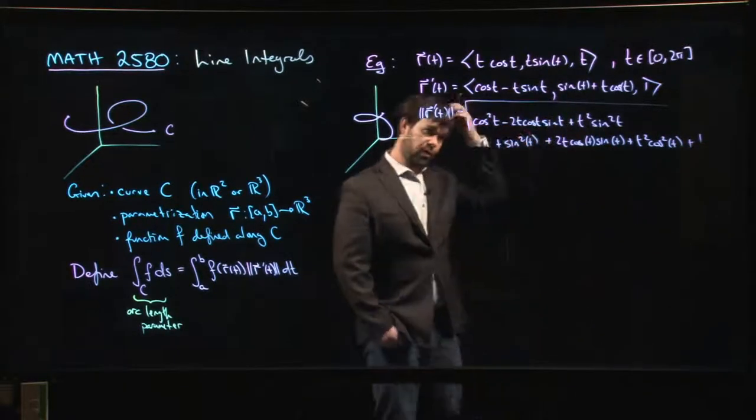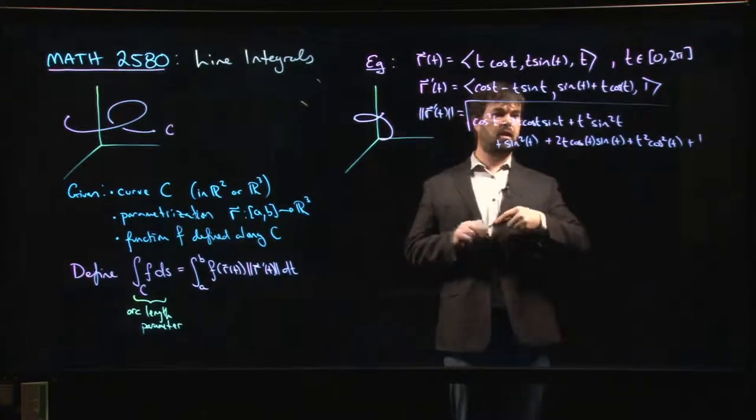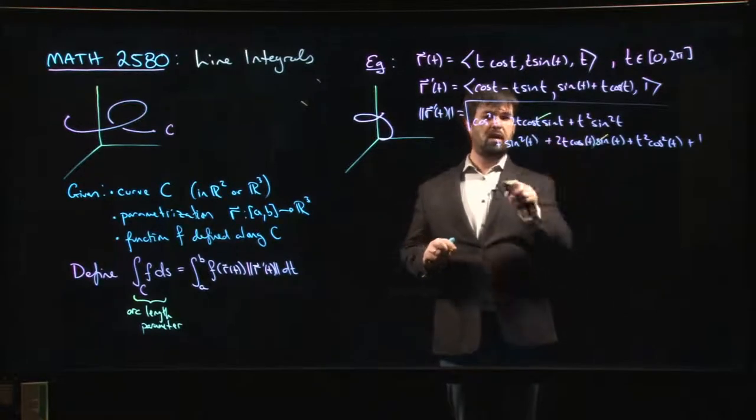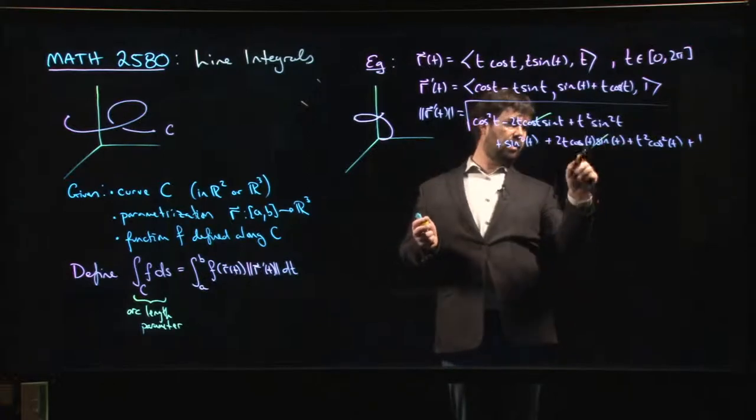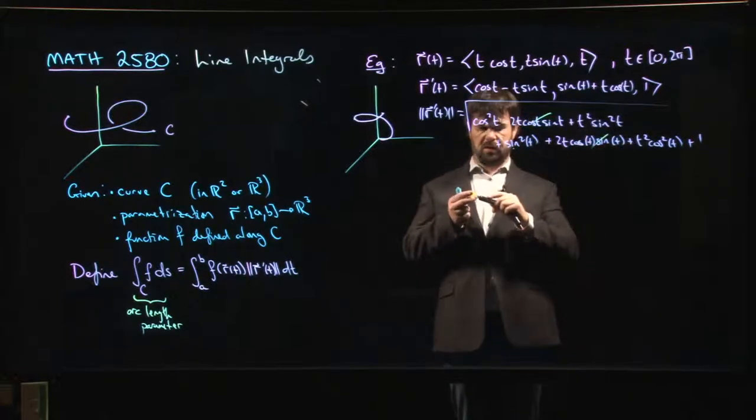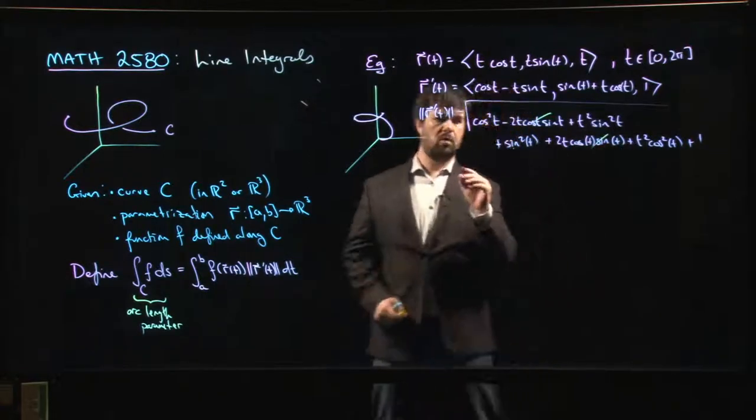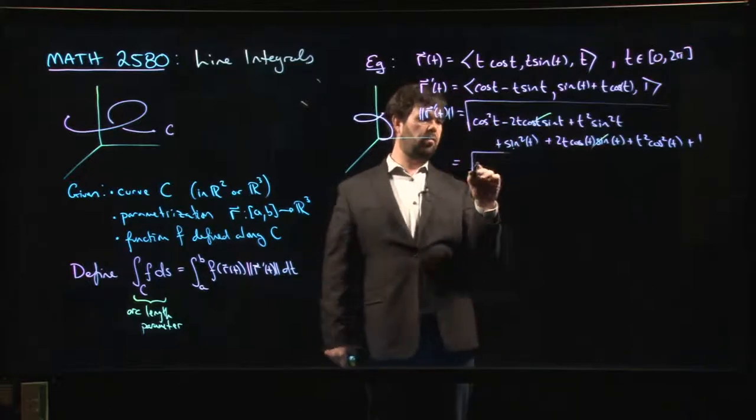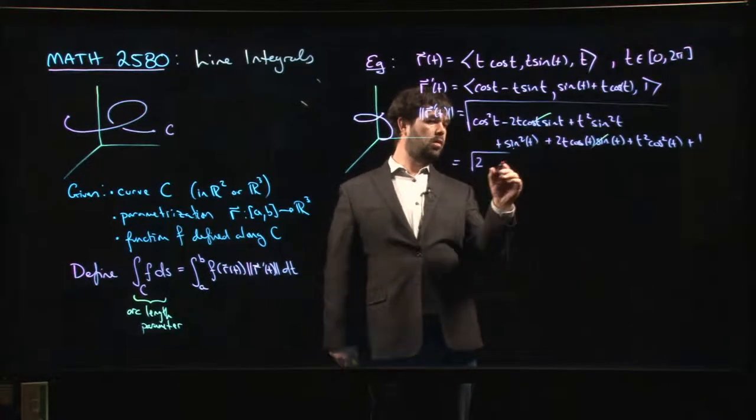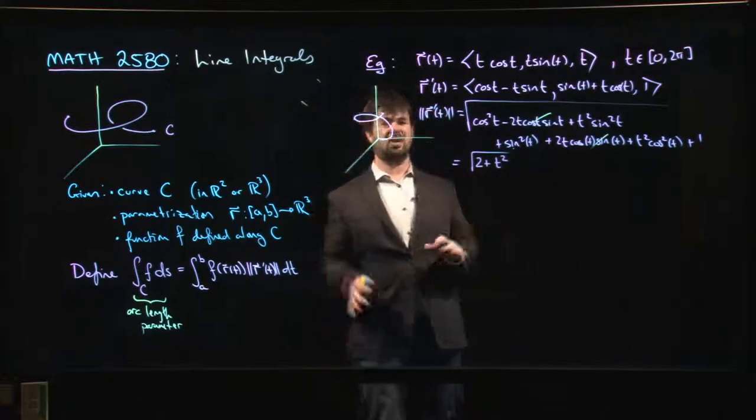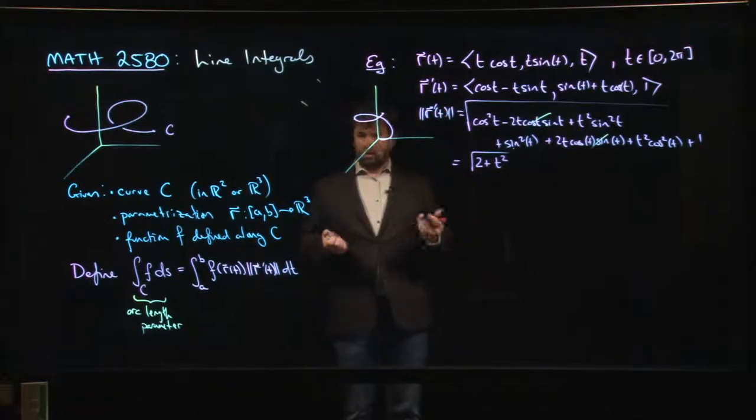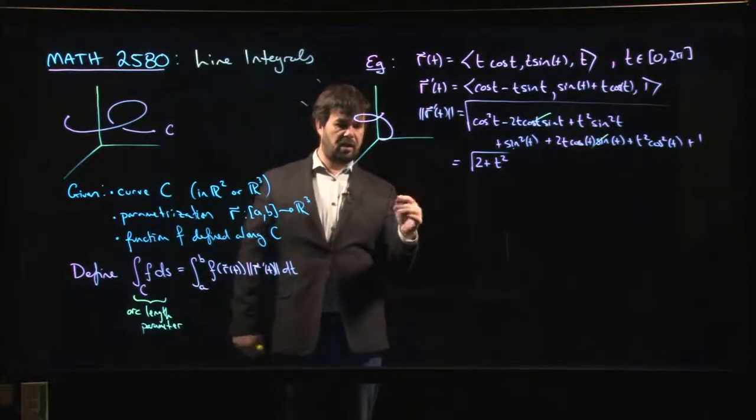So the magnitude, here's where I'm regretting my choice. It's going to be a big old square root. I think some things simplify, but let's go through it. Cos squared t minus 2t cos t sine t plus t squared sine squared t, plus sine squared t plus 2t cos t sine t plus t squared cos squared t plus 1. All that under the square root. But it's not so bad because this cancels with that, sine squared plus cos squared is 1, and then this is t squared. So we get in the end, we get 1 plus 1 is 2, 2 plus t squared. Could have been worse, right?